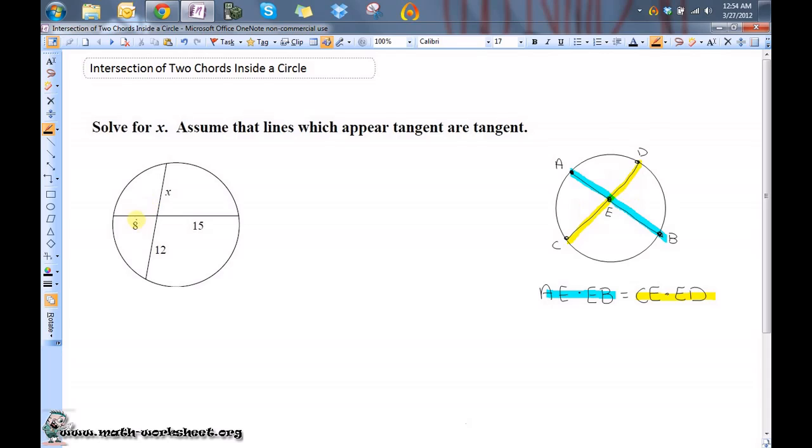So, in this example, that means 8 times 15, because those are the lengths of the two segments that make this first chord, is going to equal 12 times x.